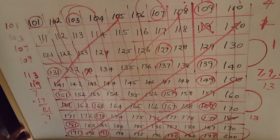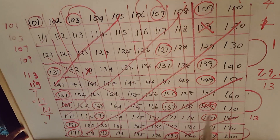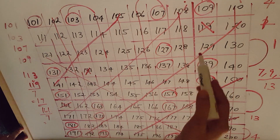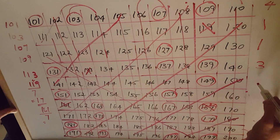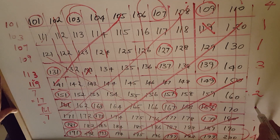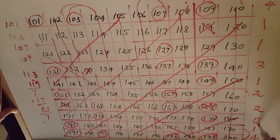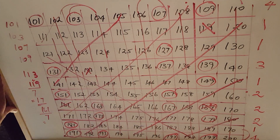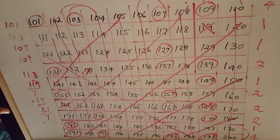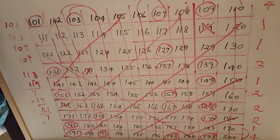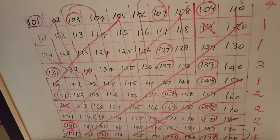So the first and last range each have 4 prime numbers. The second range has 1, here is 3, here is only 1, here is 2, here is 2, here is 2, here is 2. That gives us: 4, 1, 1, 3, 1, 2, 2, 2, 1, 4. This is the simplest way to find out the prime numbers between 100 and 200. This is a very useful tips and tricks method for prime numbers.